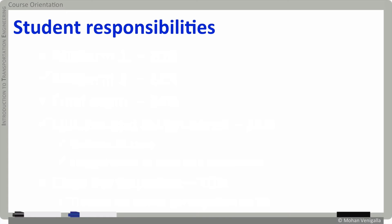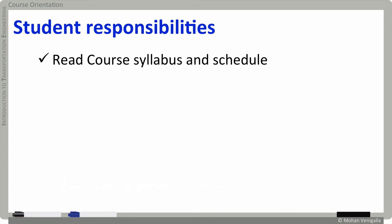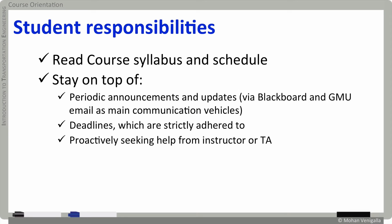Student responsibilities. First and foremost, I expect you to read the course outline, which contains the syllabus and course policies. After all, this is going to be a contract between you and me for the next few months during the semester. I also expect you to stay on top of periodic announcements and updates I make via Blackboard — they are all archived under the announcements tab, so there is no reason why you would miss them.